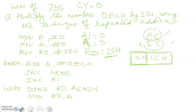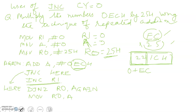Now the looping instructions: ADD A, #0ECH — it adds ECH to A. Since A was 0, EC gets added. Then JNC — Jump If Not Carry. If no carry has been generated, it moves to the next point. If there would have been a carry, that carry would have been stored in R1 by incrementing it. Right now there is no carry, so we move forward.